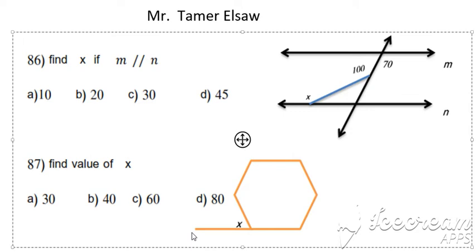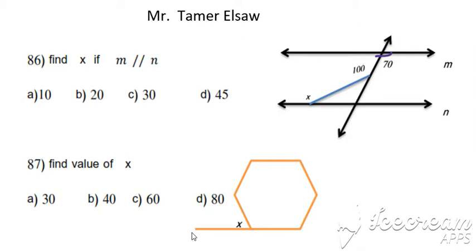Bismillah ar-rahman ar-rahim. Find x if m parallel to n. Line m parallel to n, here 70 degrees, 100 degrees. Okay, two parallel lines means we have two angles equal. 70 here is 70, why? Interior alternate angles. 100 here.